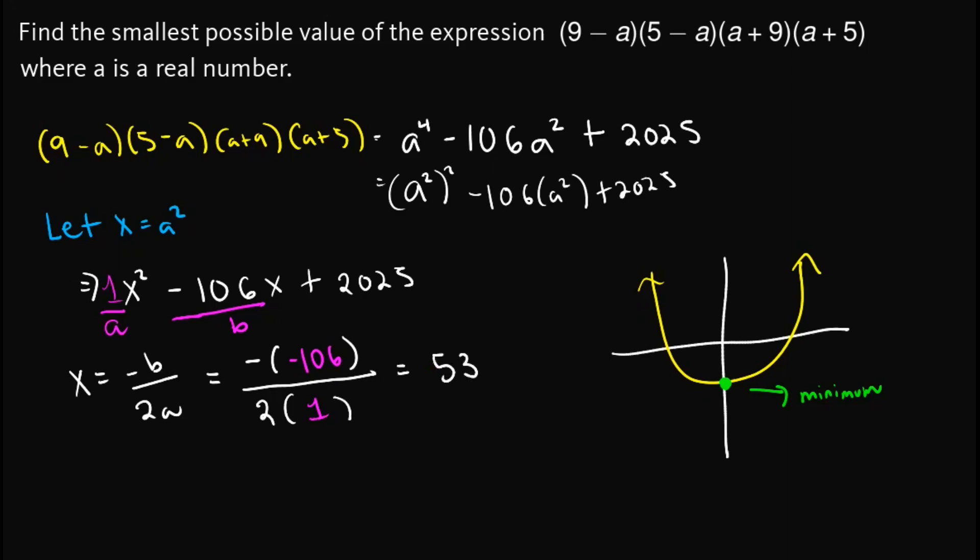Now we know x is 53. To get the y value or the value of this expression since we can view this one as equal to y, to get this value, we simply substitute 53 in this expression. So let's clear out some space.